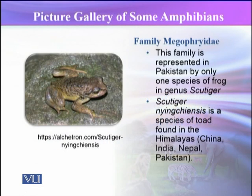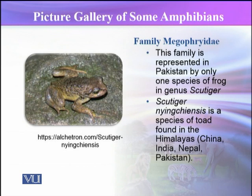Firstly, family Megophryidae. In Pakistan, there is only one species in this family represented here, and that is the Scutiger, also called the skew tiger. This is a toad that is found in the Himalayas, including China, India, Nepal, and Pakistan.